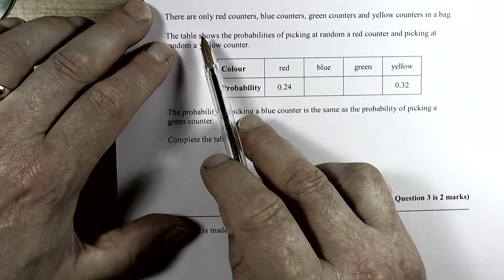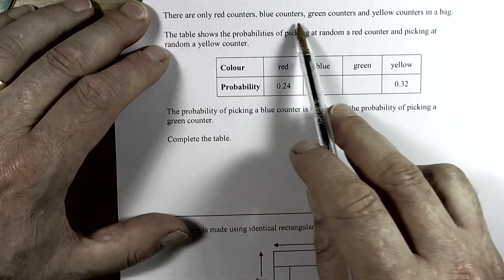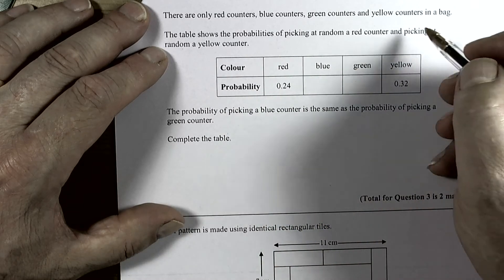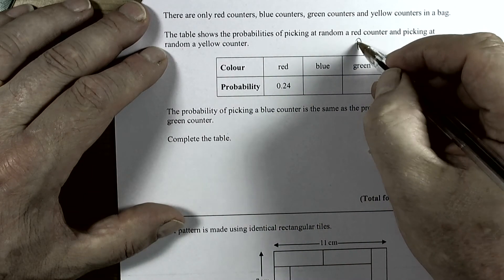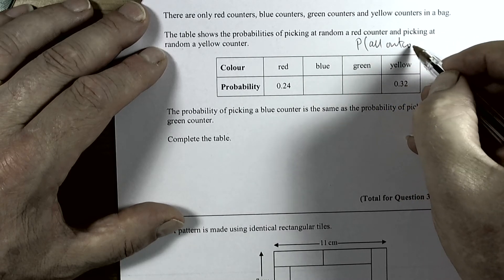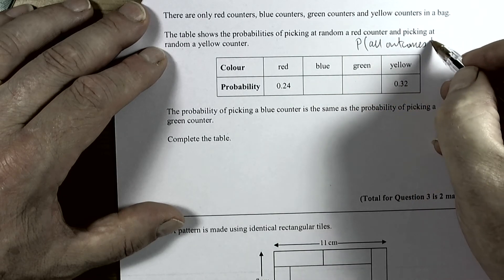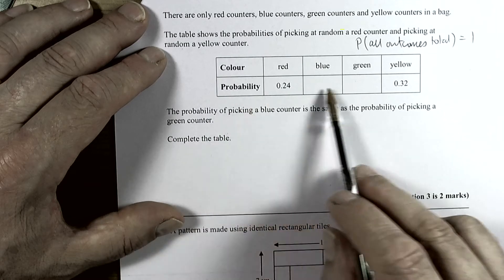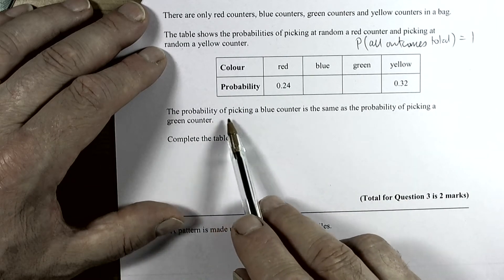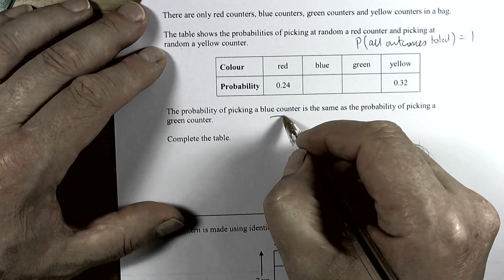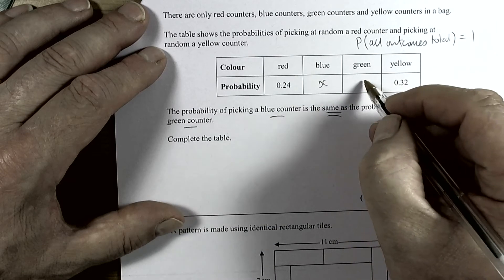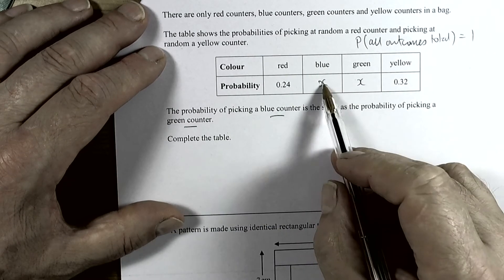Question 3 talks about there are only red counters, blue counters, green counters, and yellow counters. The table shows probabilities. We know if we know all the outcomes, then the probability of all the outcomes must be one. So the total of all the probabilities must add up to one when we know all the actual outcomes. The probability of picking blue is the same as the probability of picking green, so we've got the same value. We can call that x and call that x. We don't know it yet, but we know they are the same value.